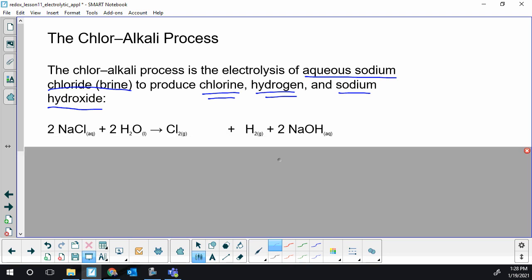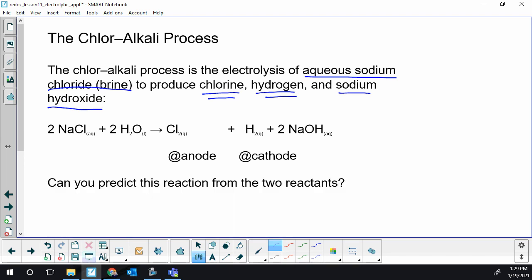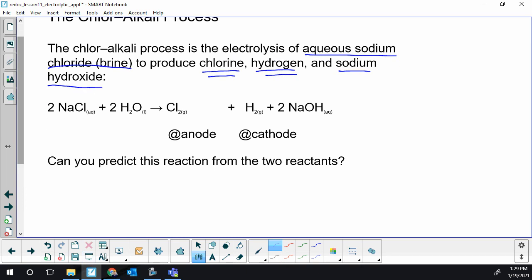Where could you get a sodium chloride solution probably pretty cheaply? Yeah, salt water, ocean. So if you pump ocean water into your factory, your processing plant, you're going to have to use energy because this is electrolytic. You can get those products and then send them off to customers. So aqueous sodium chloride brine, just salt water would work. That's going to be a pretty cheap reactant. This is the stoichiometric ratios that we see: you need two sodium chloride, you need two water molecules.